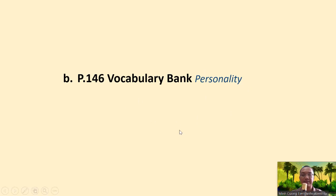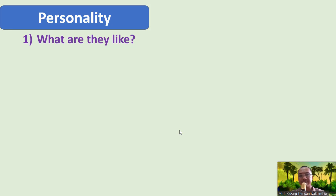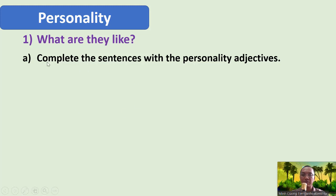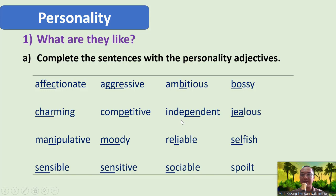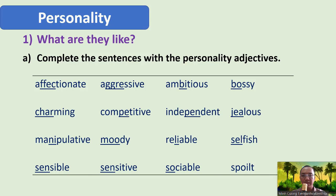Now we'll learn vocabulary for words related to personality — what are they like? These words are adjectives used to describe people's personalities. For the first adjective, 'professional' — please note the underlined syllable you need to stress. You need to stretch the syllable 'fess': a-fes-sion-al. Remember, do not read the silent syllables. A-fascinate — a-fascinate.